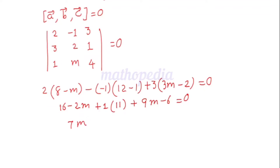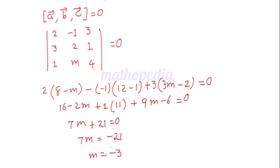Adding the constants: 16 + 11 = 27, and 27 − 6 = 21. So 7m + 21 = 0, giving 7m = −21, and m = −21 ÷ 7 = −3. Therefore the value of m is −3.